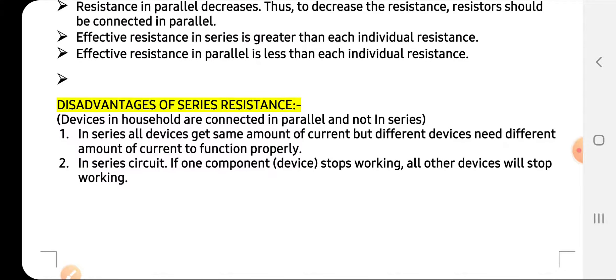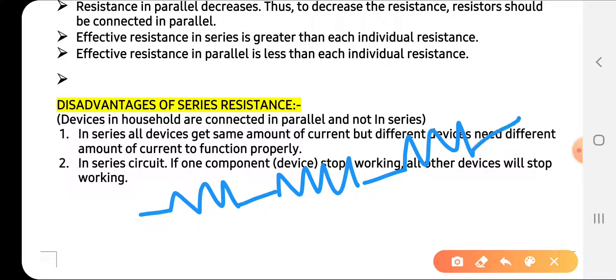Disadvantages of series resistance: In series, all devices get the same amount of current, but different devices need different amounts of current. For example, if we use a bulb on one side, an AC, and an electric heater, and connect them in series along with a refrigerator, then all will get the same current but they each require different current, so nothing will work properly.